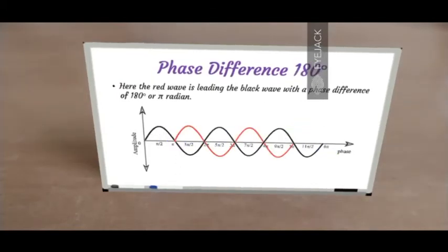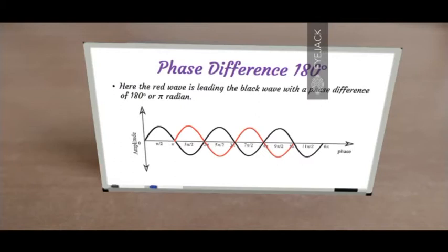Here's an example of a phase difference of 180 degrees or pi radians. The black wave is still starting at zero degrees, whereas the red wave is starting at pi radians. As it moves forward, the phase difference is always constant at pi radians or 180 degrees. So the red wave is leading the black wave with a phase difference of pi radians, and the black wave is lagging behind the red wave. And here's a special case — it actually forms a stationary wave where the two waves cancel each other out if the amplitudes are exactly the same, which leads to destructive interference.